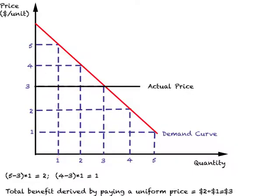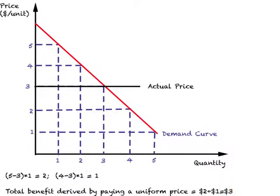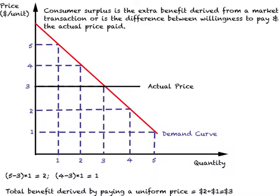The benefit is the difference between willingness to pay and actual price: $5 minus $3 equals $2 on the first unit. When this person pays $3 for the second unit, the benefit is $4 minus $3, which equals $1. For the third unit, the actual price matches the willingness to pay, so there's no extra benefit. Adding these up: two plus one equals three dollars total benefit — this is called the consumer surplus.